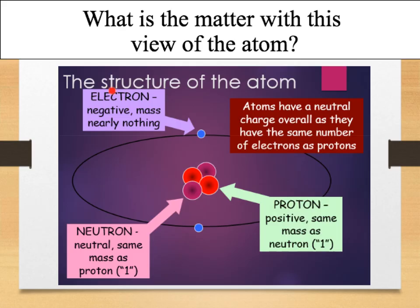Last lesson we looked at the structure of the atom. This should be the structure of the atom that you're very familiar with. In the nucleus we have the protons and neutrons and around the outside we have electrons. However, there is an issue with this view of the atom because inside both our protons and neutrons we have subatomic particles known as the fundamental particles.